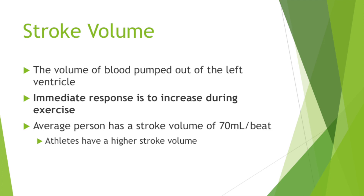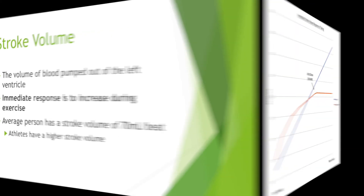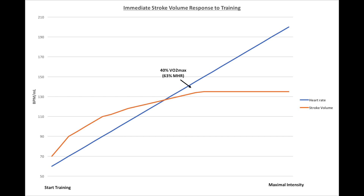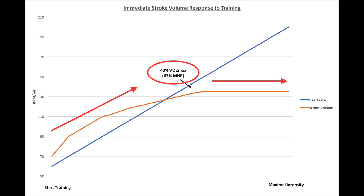An average human has a stroke volume of approximately 70 milliliters, and this number can double during high intensity exercise. A conditioned athlete will be able to attain an even higher stroke volume. Stroke volume's immediate response during exercise is to increase. An athlete's stroke volume will increase until it reaches about 63% of their maximum heart rate and then plateau. The extra increase in cardiac output — that's the amount of blood leaving the left ventricle per minute — will be provided by an increase in heart rate.